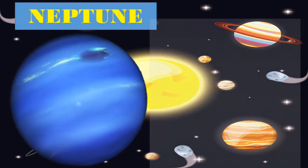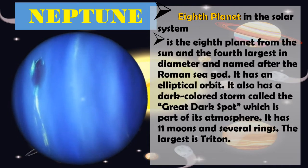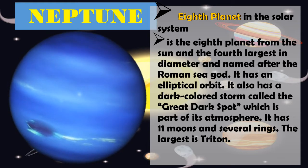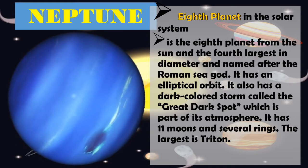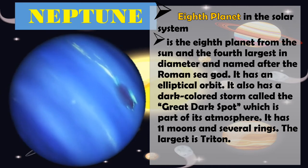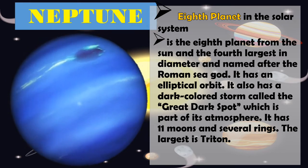Neptune, eighth planet in the solar system, is the eighth planet from the Sun and the fourth-largest in diameter and is named after the Roman sea god. It has an elliptical orbit. It also has a dark-colored storm called the great dark spot which is part of its atmosphere. It has 11 moons and several rings. The largest is Triton.